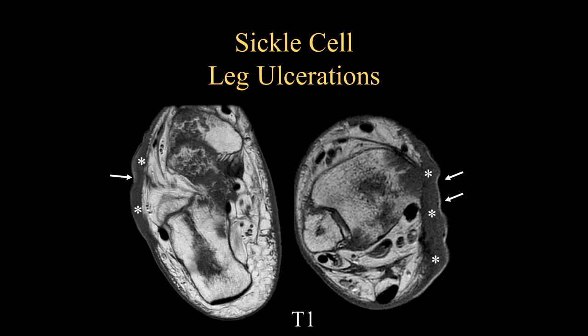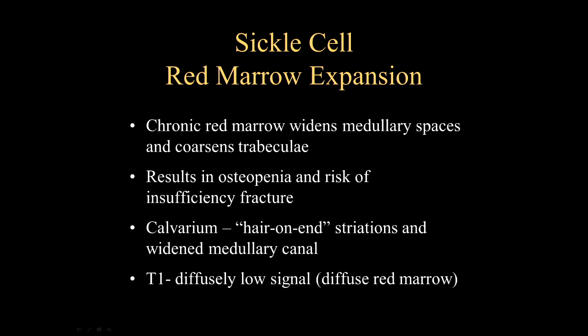Patients can also have leg ulcerations because of the soft tissue thrombosis, vasoocclusion, and the overall poor blood supply. Specifically over areas of bony prominences, leg ulcerations are more common. Also note the areas of bone infarction as well as red marrow hyperplasia throughout the remaining portion of this ankle. The calvarium can have a very classic hair-on-end appearance, although this is actually more common in thalassemia, which we're going to discuss next.